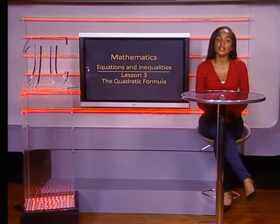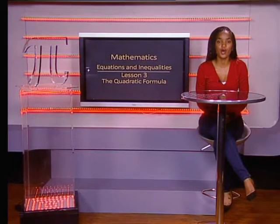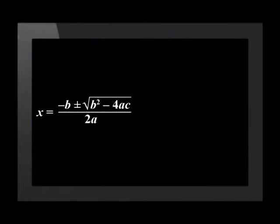When an expression cannot be factorized, we are able to use the quadratic formula to help us solve the equation. The quadratic formula is x equals negative b plus minus the square root of b squared minus 4ac all over 2a.